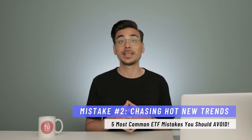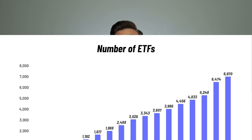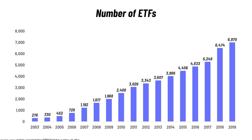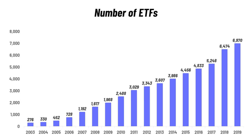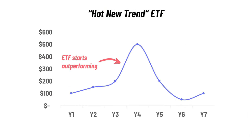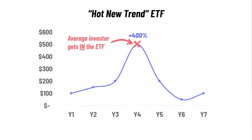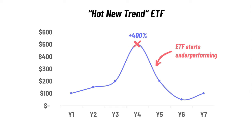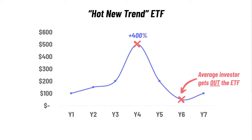Mistake number 2 in ETF investing is chasing the hot new trend. There are hundreds of new ETFs that come out each year chasing the newest trends — AI, e-gaming, 3D printing, you name it. Buying into the latest trends might get you higher returns, but be careful. All these hot new trends have one thing in common: they start outperforming the market for a few years, they become popular, and the average investor gets in at the peak performance — then they start underperforming the market.